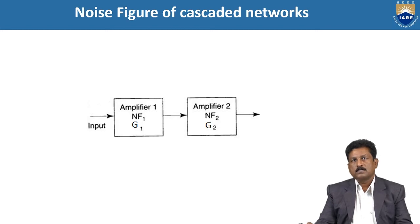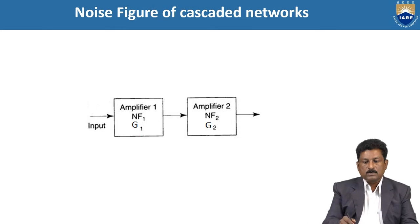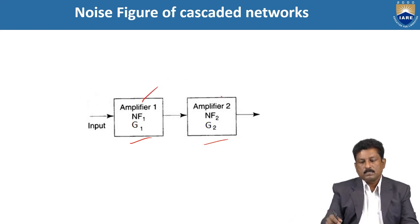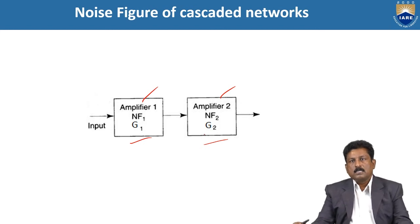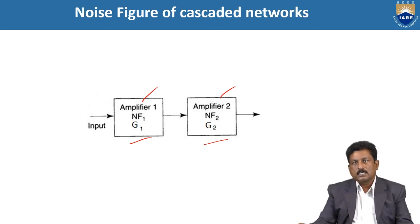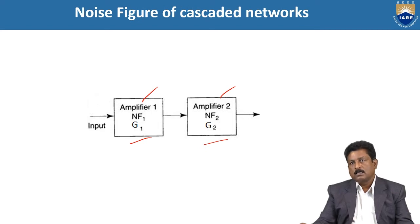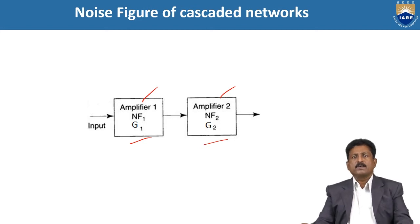Once we have the noise factor, we calculate the noise figure for the cascaded network. You can see NF1, noise figure 1 with gain G1, and NF2, noise figure 2 with gain G2 — network 1 and network 2 connected in series mode. In a communication system, amplifiers are connected in series to increase the signal strength to the required level, arranged in cascade mode.